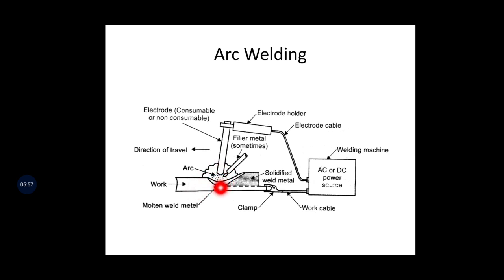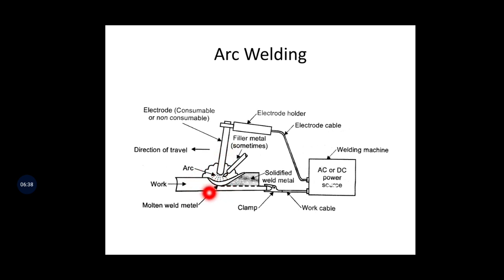If the gap is too large, ionization of the air medium does not take place and electrons will not jump from electrode to workpiece — so no electric arc is established. If the gap is too small, the electrode will stick to the workpiece and a short circuit takes place, which may damage both the workpiece and electrode. When sticking occurs, you have to use another metal piece to separate them — a problem typically faced by inexperienced welders.